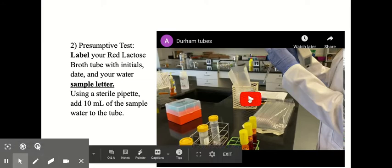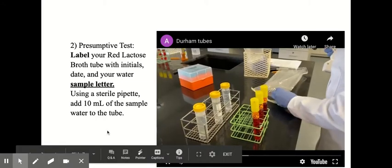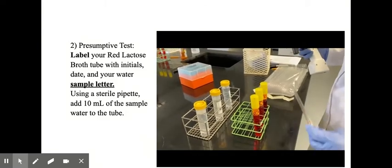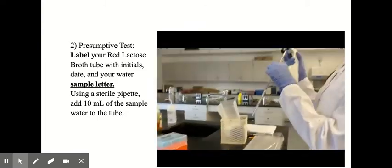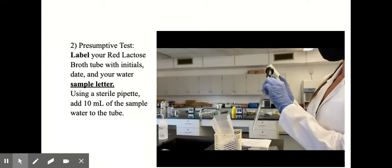And then using a sterile pipette, you're going to add 10 milliliters of that sample water to the red lactose broth.